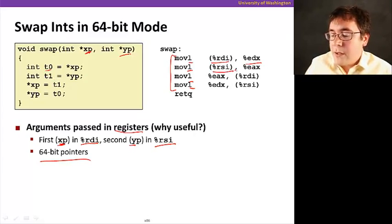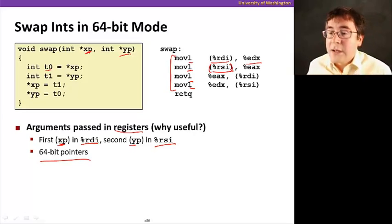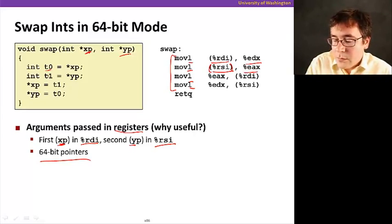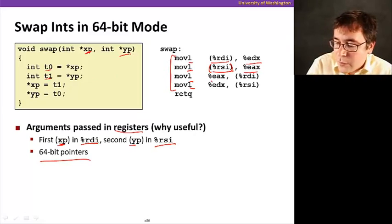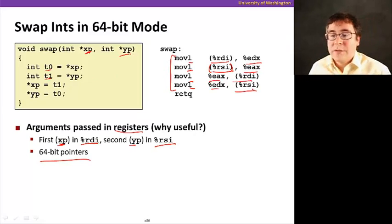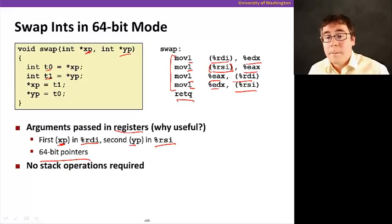We get Yp, its contents - that's why we're using the parenthesis here, we're dereferencing the address - storing it in the other temporary variable, T1, that happens to be mapped to EAX. And then, we're just storing the temporary variables back into the pointers. And then we return. It's much simpler, and the main reason it's simpler is because we don't have to use the stack at all. No stack operations required.